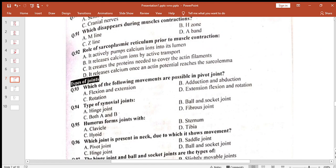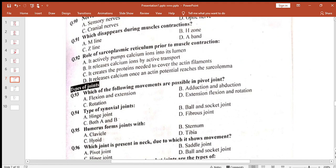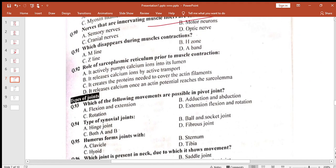Which of the following disappears during muscle contraction? H zone khatam ho jata hai. Role of sarcoplasmic reticulum prior to muscle contraction: it releases calcium ions by active transport.